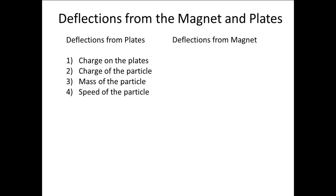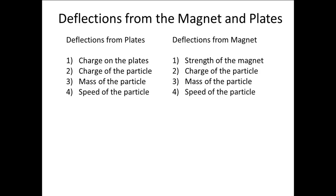Similarly, the deflection caused by the magnet depends on four things. The strength of the magnet and the charge of the particle, which determine the magnetic force, the mass of the particle, and the speed of the particle.